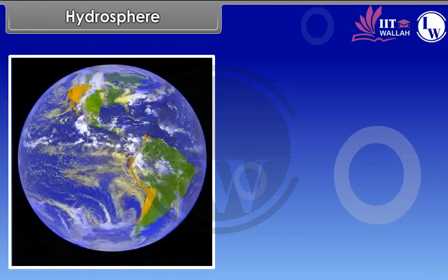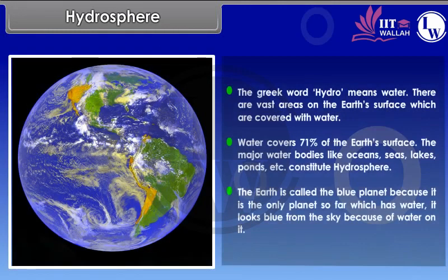The Greek word 'hydro' means water. There are vast areas on the earth's surface which are covered with water. Water covers 71% of the earth's surface. The major water bodies like oceans, seas, lakes, ponds, etc. constitute the hydrosphere. The earth is called the blue planet because it is the only planet so far known to have water. It looks blue from space because of the water on it.